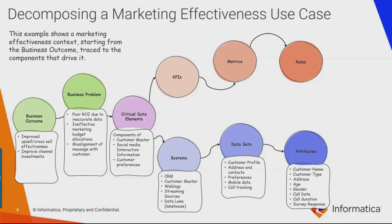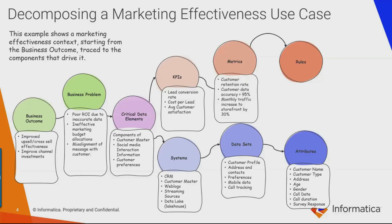Once we have broken down the data elements into their lowest unit, we look at managing their impact on the business outcome. Towards the top, we have business-level KPIs such as lead conversion rate or cost per lead to track the business outcome and progress. Additionally, you may track metrics that indirectly impact KPIs — a metric such as customer data accuracy can provide insight into the quality of data used for marketing decisions, or monthly traffic to storefront could provide insight into customer interest and engagement. Finally, towards the right, we have the rules that drive the measurement and improvement of data quality to drive that specific business outcome.